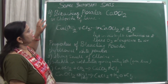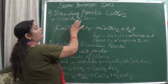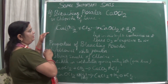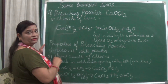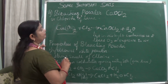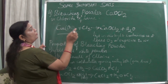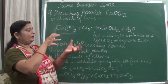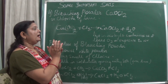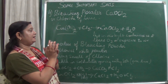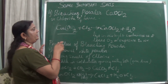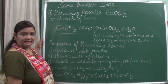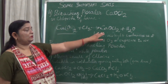The next salt is bleaching powder — also known as calcium oxychloride or chloride of lime — with formula CaOCl2. It is prepared by reacting calcium hydroxide with chlorine: chlorine reacts with Ca(OH)2 to form calcium oxychloride (bleaching powder) plus water. Bleaching powder should be kept in airtight containers, because if exposed to air the chlorine will be lost. It has a characteristic pungent smell due to the presence of chlorine.